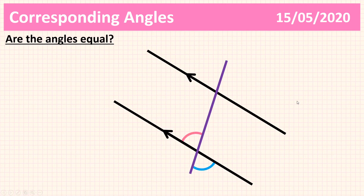What about this one? For this one, the angles are equal, but not because they are corresponding. The angles are equal because they are opposite each other. We know that if two lines intersect at one point, the opposite angles will be equal — but not because of our corresponding angle rule.